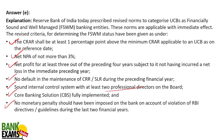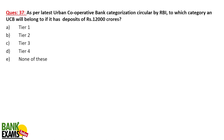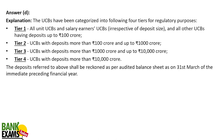As per the latest UCB categorization circular by RBI, which category will a UCB belong to if it has deposits of more than 12,000 crores? Tier 4. The full categorization: Unit UCBs and salary earner UCBs (irrespective of deposit size) = Tier 1; all other UCBs with deposits up to 100 crores = Tier 1; 100 crores to 1,000 crores = Tier 2; 1,000 crores to 10,000 crores = Tier 3; more than 10,000 crores = Tier 4. Deposits are reckoned as per audited balance sheet as of 31st March of the immediately preceding financial year.